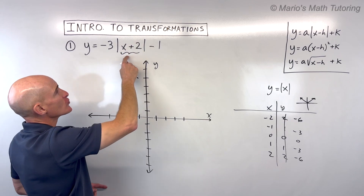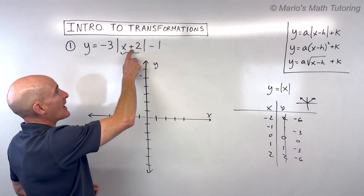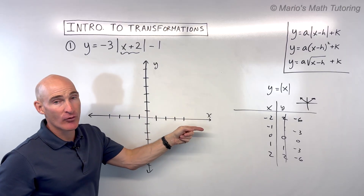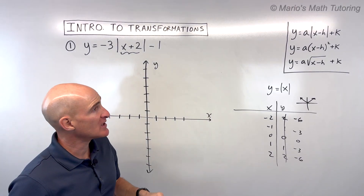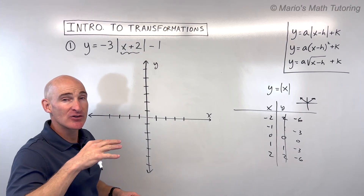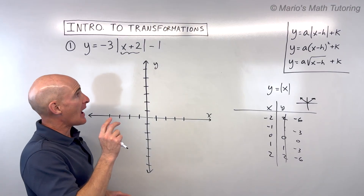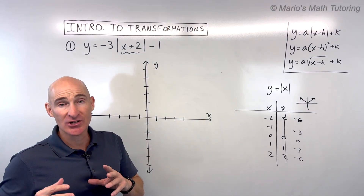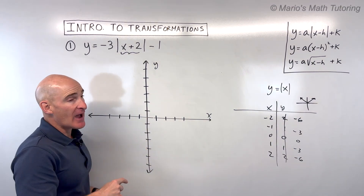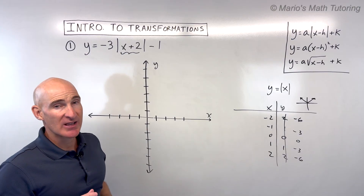If it's grouped with the x, it has what I like to call the opposite effect. So if you're adding two, that's actually going to shift the graph left two. If this was minus two, it would shift the graph right two. When I say grouped with x, I mean it's inside the absolute value, or in the parentheses, or underneath the square root with the x — it affects those x values in the opposite way. Adding and subtracting is a translation or shift; multiplying or dividing is a stretch or shrink, or a reflection if it's negative.